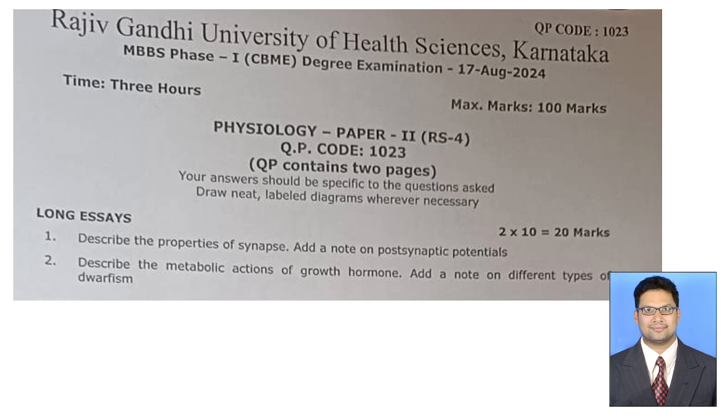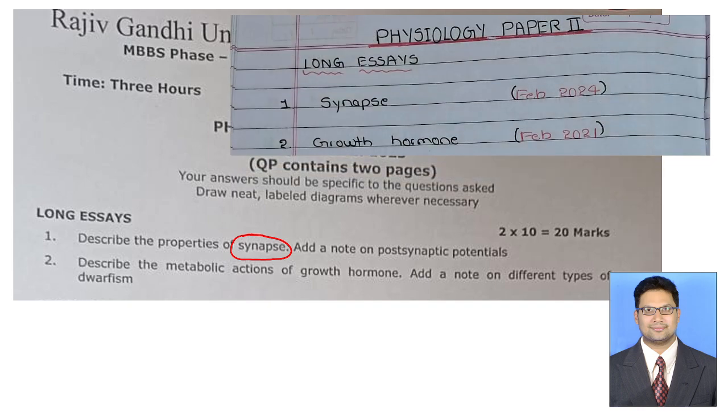I am not going to discuss in detail about the main question and short essays. The main question, one question is about synapse - describe the properties of synapse and add a note on post-synaptic potential. The other is metabolic actions of growth hormone and different types of dwarfism. Both are repeat questions. Synapse is repeat question from Feb 2024, growth hormone from Feb 2021, and dwarfism also repeat question in various papers.